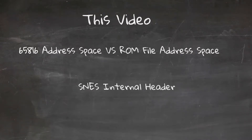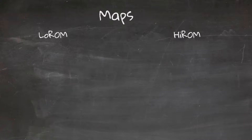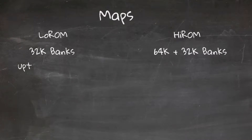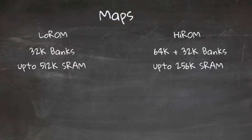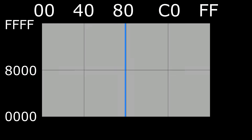The SNES has two main mappings: Low ROM and High ROM, although these are blanket terms and don't actually accurately describe the mappings fully. Broadly, Low ROM gives you 32k banks of ROM data in each of its banks, while High ROM gives you 64k banks of ROM data in some banks and upper 32k in others. Surprisingly, both layouts give you up to 4 megabytes of cart data, while the 65816 has a 16 megabyte address space. The 4 megabyte limit is due to a lot of mirroring.